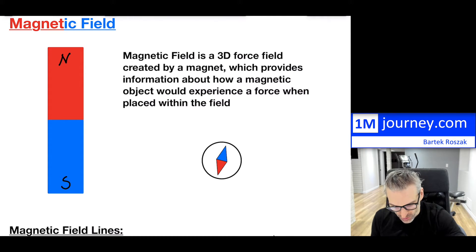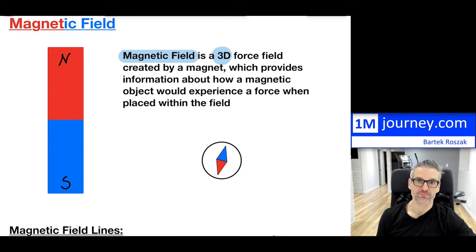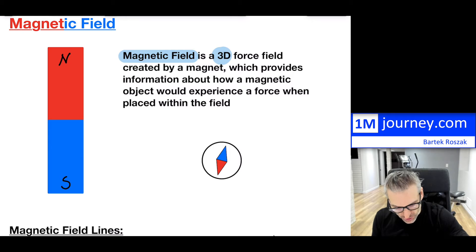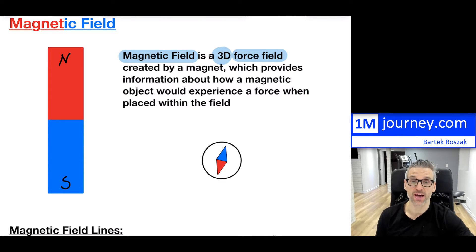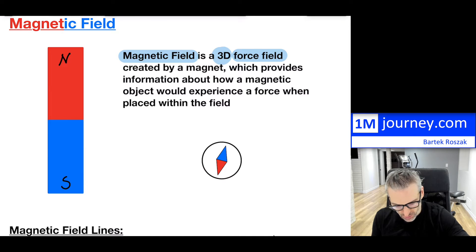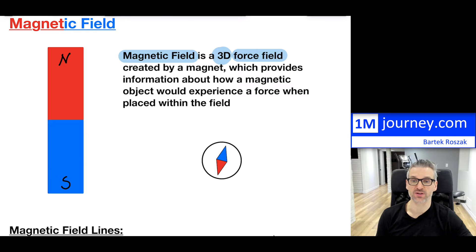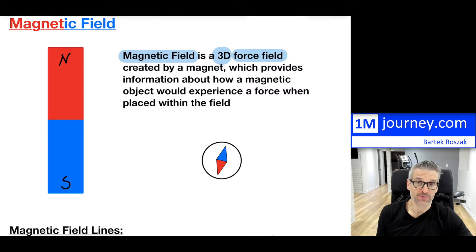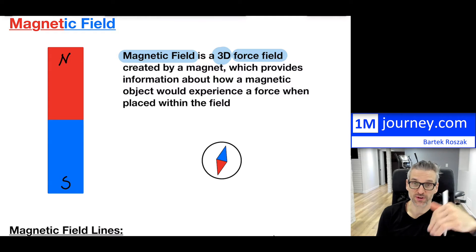When you're thinking of the magnetic field, I would want you to think of it this way: the magnetic field is basically in three dimensions — it is all around the magnet. It is a three-dimensional force field, which means it does create forces around the magnet. It is created by the magnet itself, which provides information about how a magnetic object would experience a force when placed within the field. One example of a force field is the gravitational force field, where we draw the lines of gravity — but they're just imaginary, although we know that any mass near the Earth's surface will follow the gravitational field lines towards the Earth.